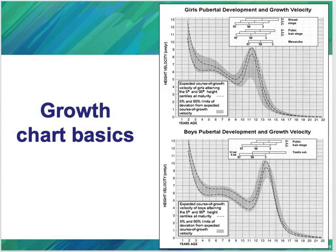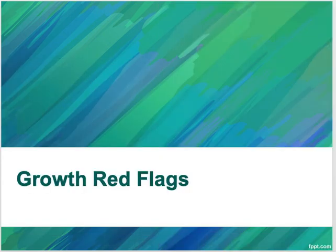Growth chart basics also include growth velocity and growth spurts. For both sexes, growth spurts are correlated with breast stage, pubic hair stage, and testicular volume, helping you understand that a patient near a growth spurt will also be developing corresponding clinical characteristics. With this we have finished growth physiology, general calculations like MPH, and general expectations for growth. A follow-up video will address growth red flags. This video was last updated November 2019.